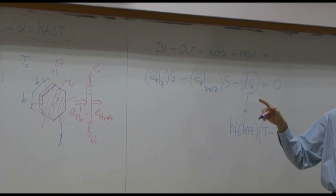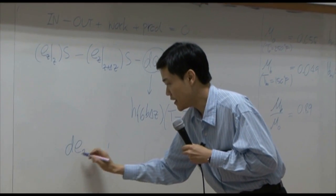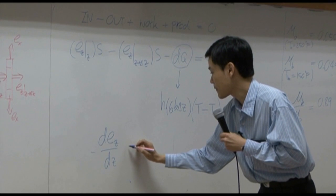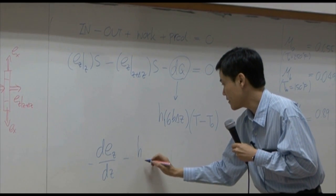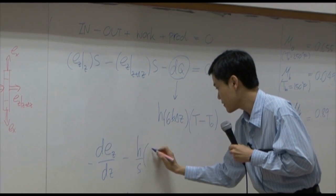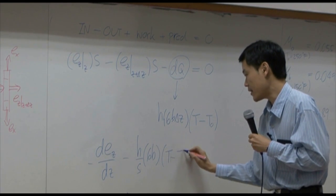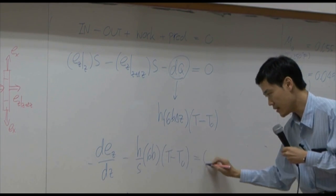You take the limit, you have dEz by dZ minus here, minus H over S, 6B times T minus T0, equal to zero.